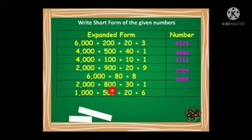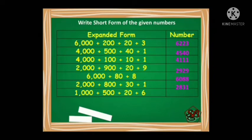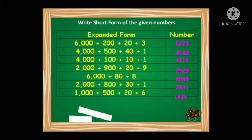2000 plus 800 plus 30 plus 1: 2 at thousands place, 8 at hundreds place, 3 at tens place, and 1 at ones place — the number formed is 2831. Next, 1000 plus 500 plus 20 plus 6: 1 at thousands place, 5 at hundreds place, 2 at tens place, and 6 at ones place — the number formed is 1526.